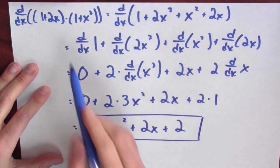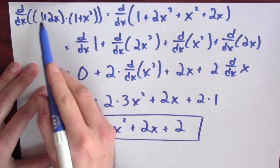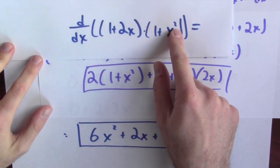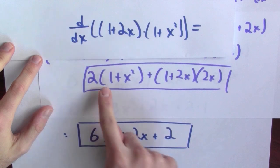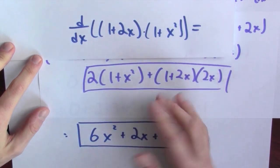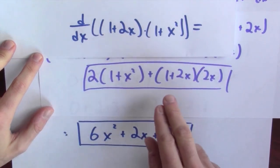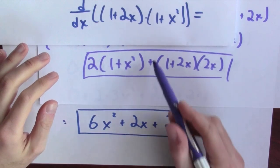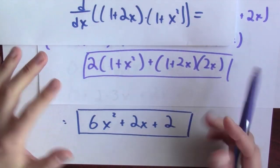So this is the derivative of our original function. What just happened? I'm trying to differentiate (1 + 2x)(1 + x²). When I used the product rule, I got 2(1 + x²) + (1 + 2x)(2x). When I expanded and then differentiated, I got 6x² + 2x + 2. So are these two answers the same? Yes, these two answers are the same — let's see how.